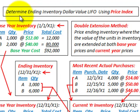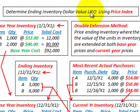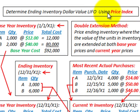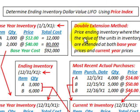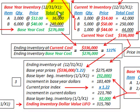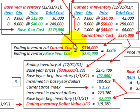Here we are going to go through an example to determine the ending inventory value — specifically the dollar value LIFO inventory. LIFO stands for last in first out. We are going to use a price index to determine this dollar value LIFO, developing an internal price index based on our base year cost and our current year cost.